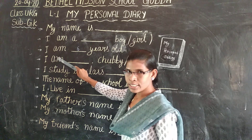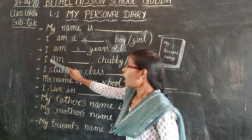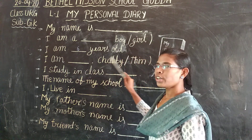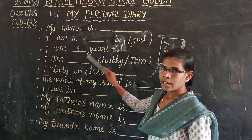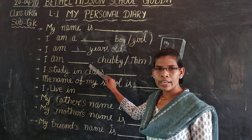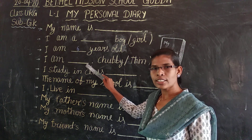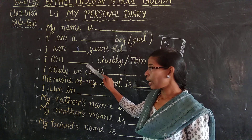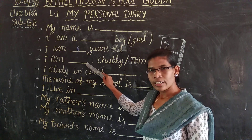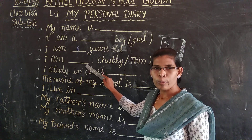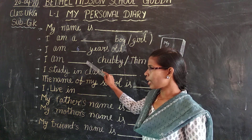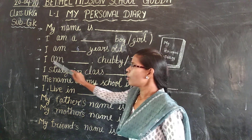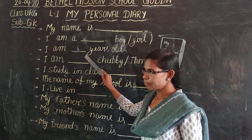Now the fourth line: I am chubby, or you are thin. If you are a chubby boy or chubby girl, you have to write 'chubby'. And if you are thin, you have to write 'thin'. So you write: I am thin, or I am chubby.